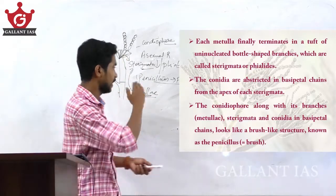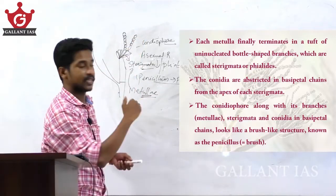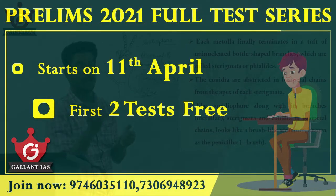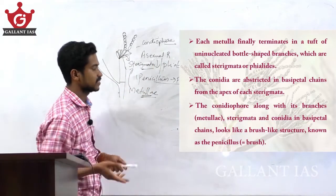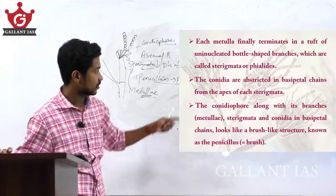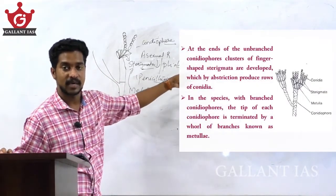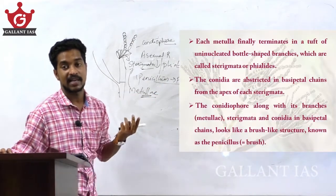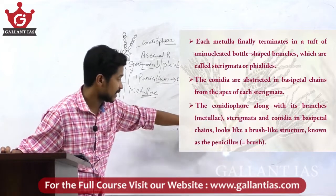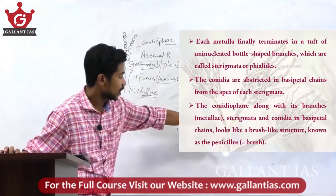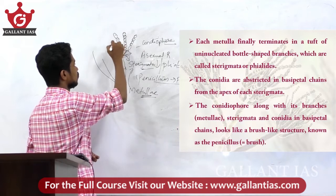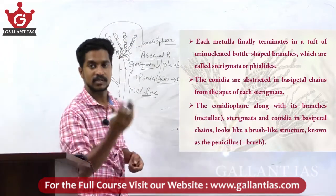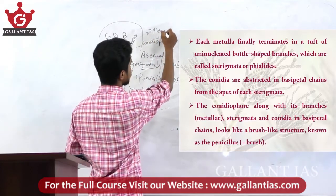The conidia are abstracted in basipetal chains from the apex of each sterigma. The conidiophore along with its branches, metula, sterigmata, and conidia in basipetal chains looks like a brush-like structure known as the penicillus. All the metula, sterigmata, and conidiophore together form this brush-shaped structure called the penicillus.